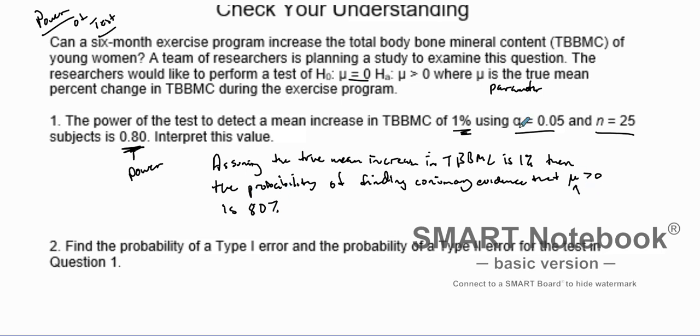Or what is the mu? The mu is the mean percent change in TBBMC during the exercise program. That's what we know there.